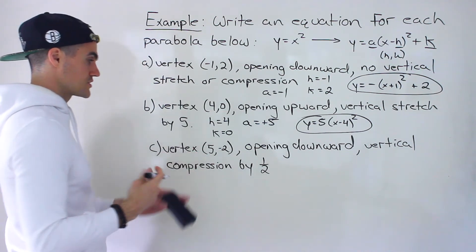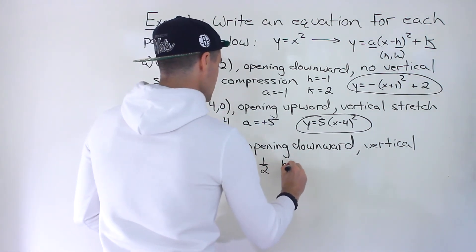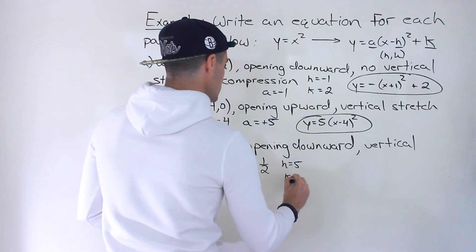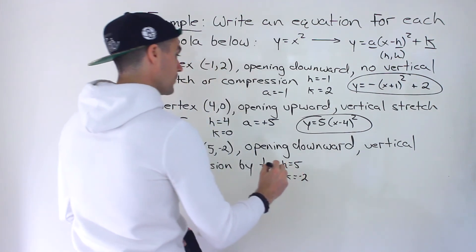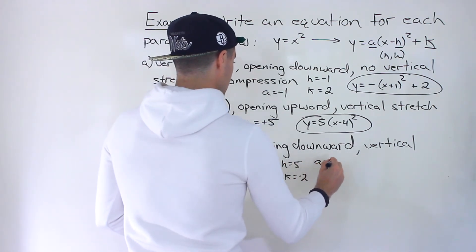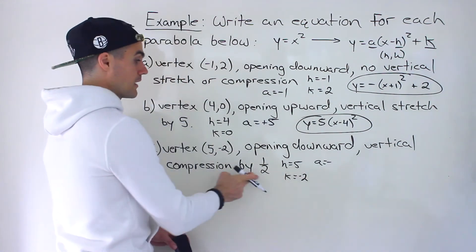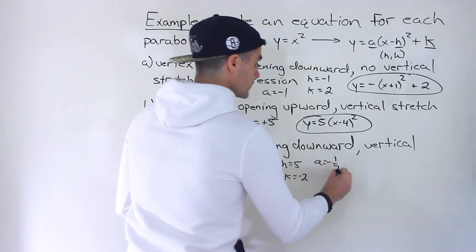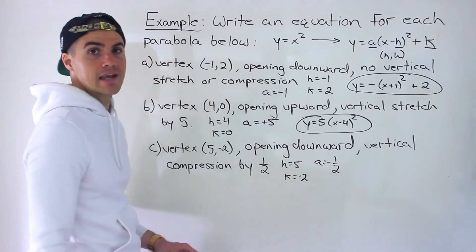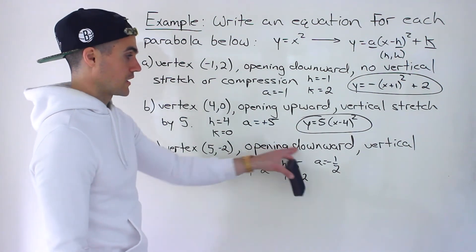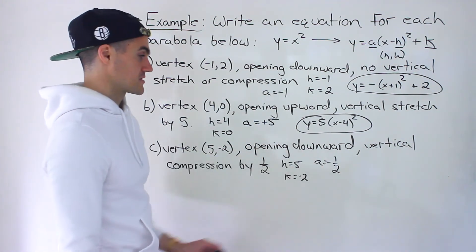And then finally part C, vertex five, negative two. So H is five, K is negative two. Opening downwards. So the A value is going to be negative. And then there's a compression by one over two. So we got one over two like that. So the A value is negative one over two. If it was opening upwards, it would be positive one over two.